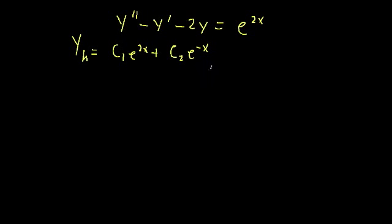In the last couple of videos, I've been loosely talking about a scenario in which your particular solution overlaps with your homogeneous solution, but I've never really been too explicit about it. So let's take a look at this example here. Our classic differential equation is set equal to an exponential function. By the method of undetermined coefficients, we would guess that the particular solution to try is a constant times that same exponential function. But notice — this term in our particular solution shows up in our homogeneous solution. They overlap, or they're linearly dependent.